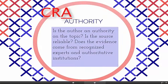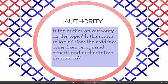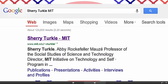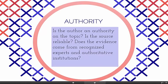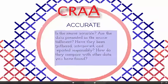A is for authority. Is the author an authority on the topic? Is the source reliable? Does the evidence come from recognized experts and authoritative institutions? To answer these questions requires a bit more research. Do a quick Google search to see if that writer actually teaches at MIT, or see if the writer's credentials line up with the topic. So if I have a PhD in education, for example, am I really an authority to write a book about genetic engineering?